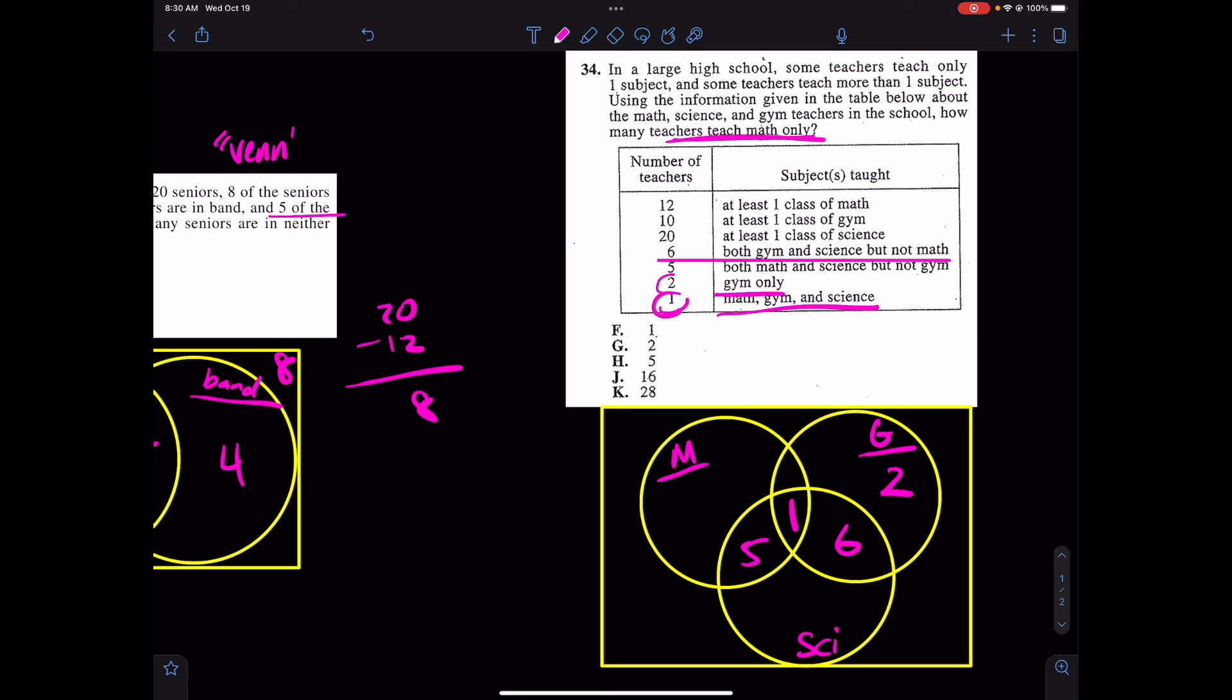From there, let's start picking this apart. It says, I'll do it in a different color here, 20 in science total. Again, 20 in science total. In that case, if this is five and this is one and this is six, that adds up to 12. Mustn't this be eight? Think so. What about 10 in at least one class of gym? Well, 10 will take up the total there. Really, one, six, and two is nine. Mustn't this be one?